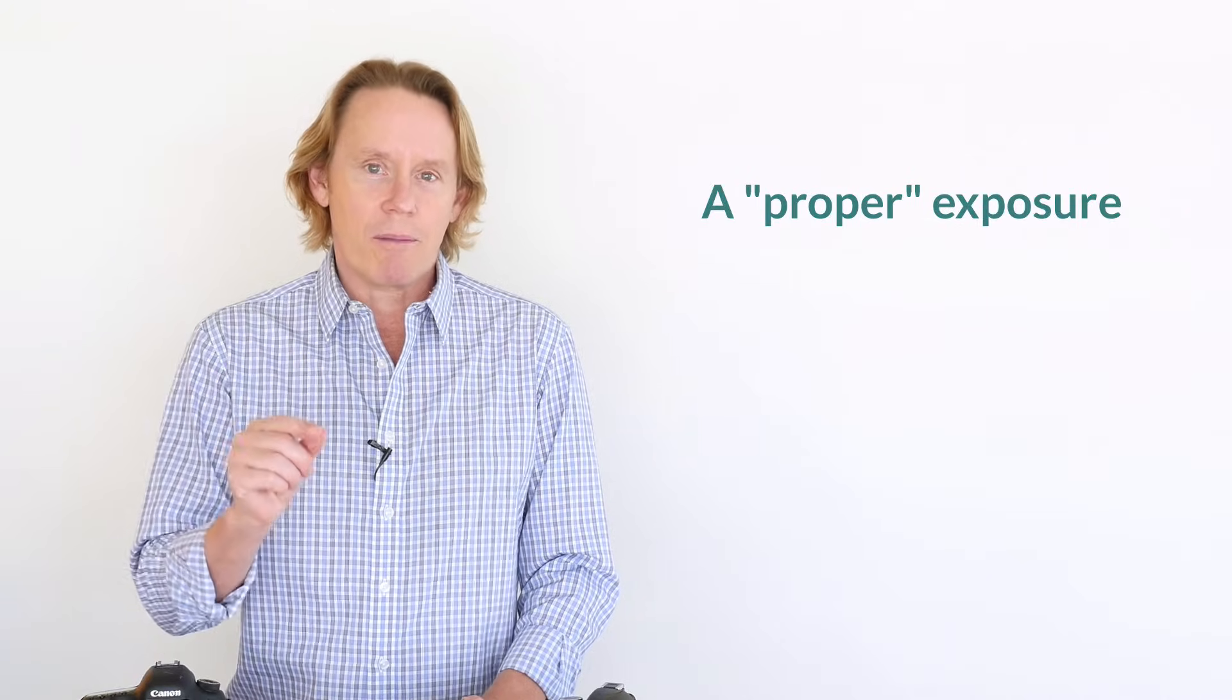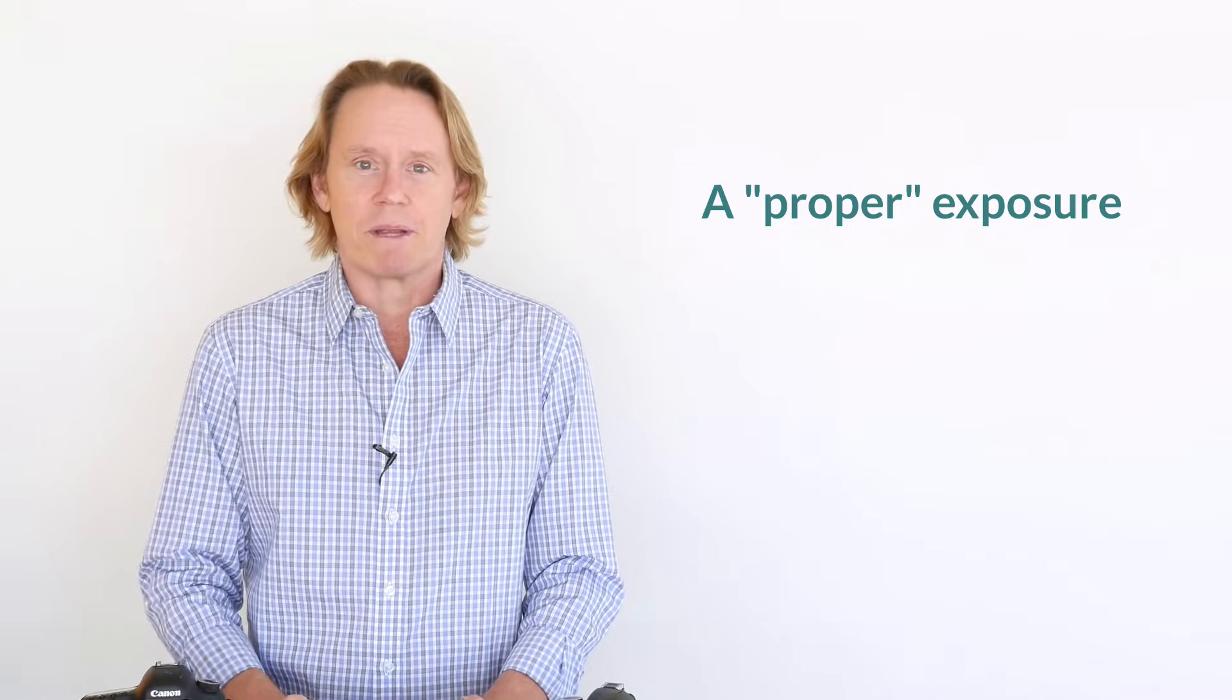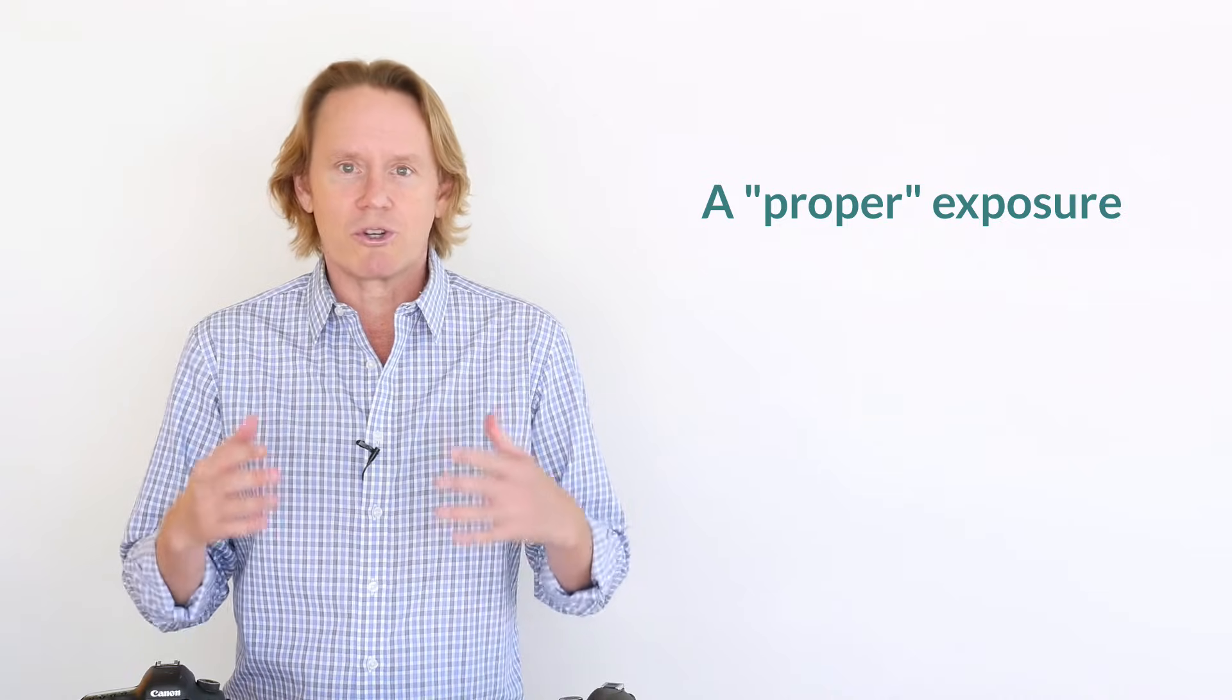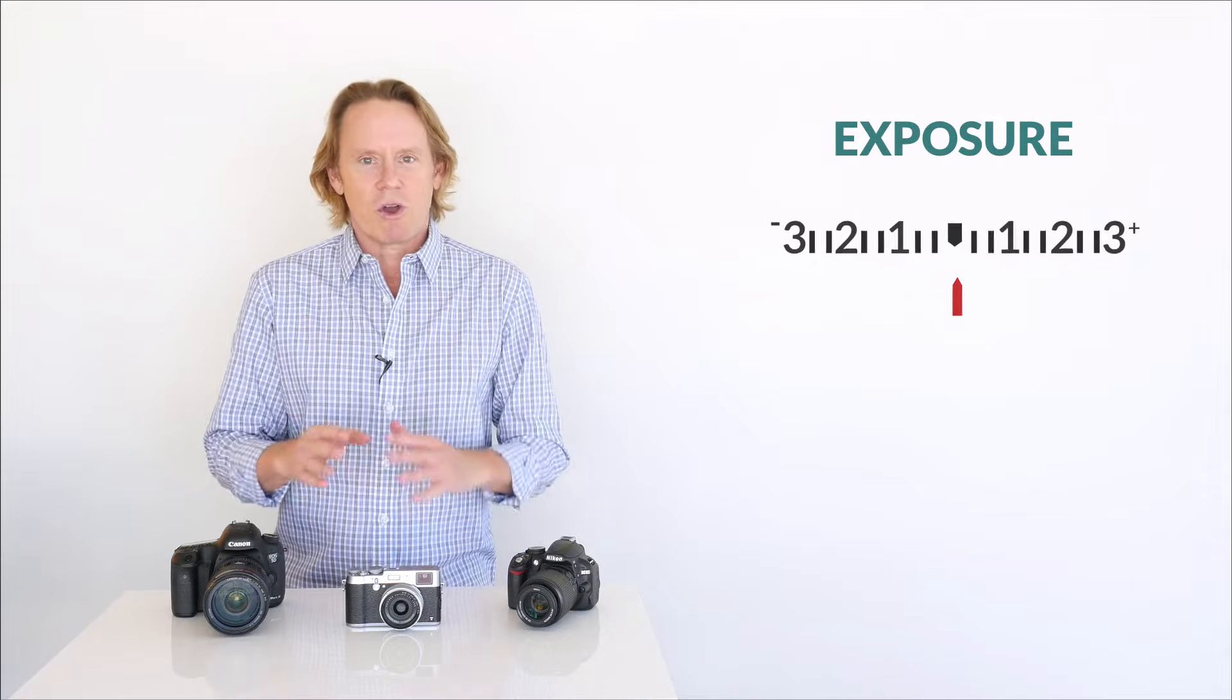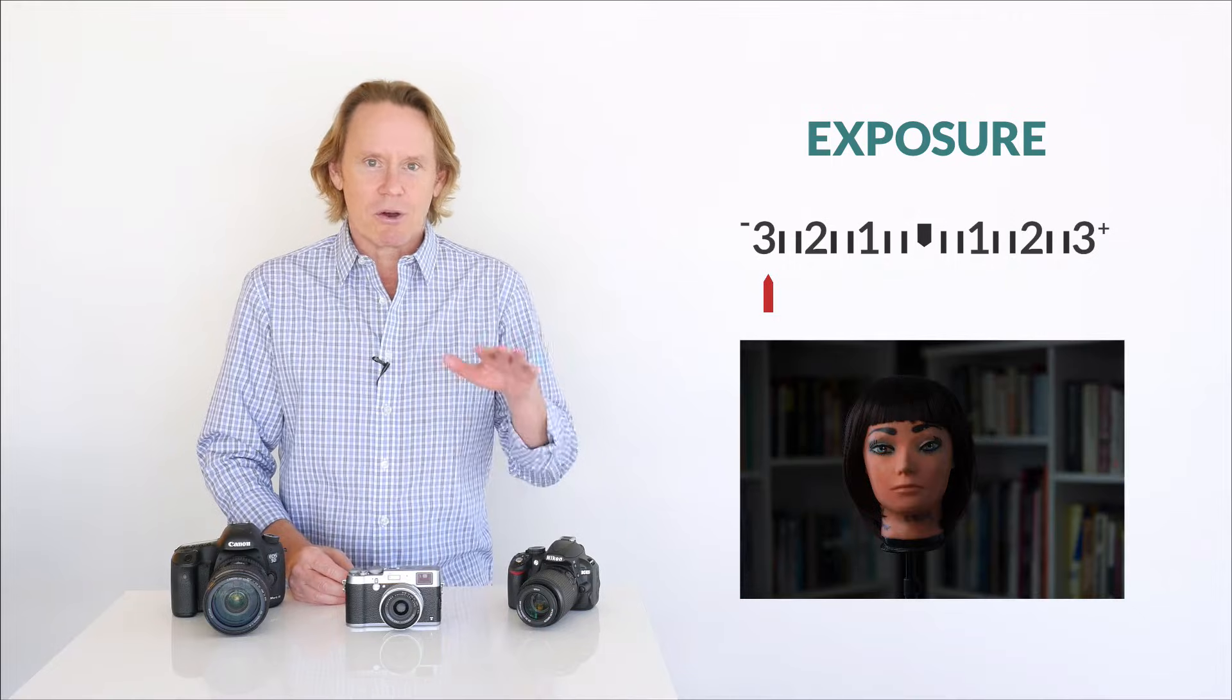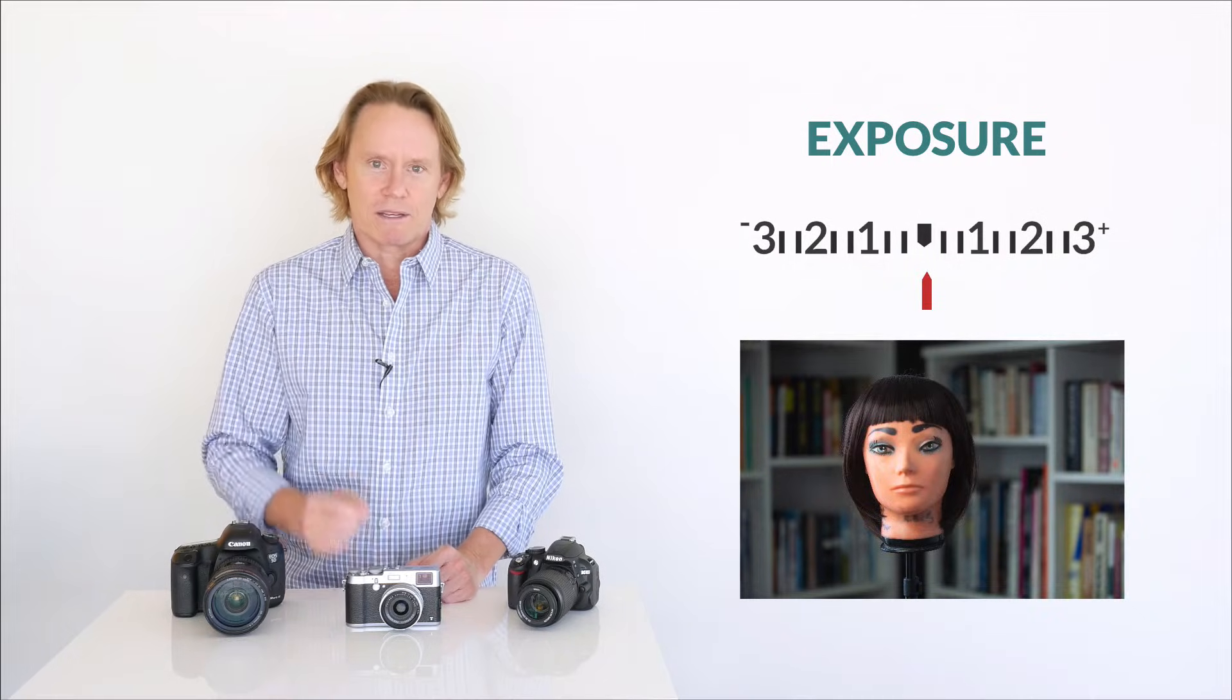So what is the function of this built-in light meter? It's there to tell you when you have a proper exposure. It's there to tell you if you have too much light or too little light or just the right amount of light in your photo. And as we've discussed, the amount of light in your photo is called the exposure. If there's too much light, it's called overexposed. If there's too little light, it's called underexposed. And if there's just the right amount of light, it's called a correct exposure.